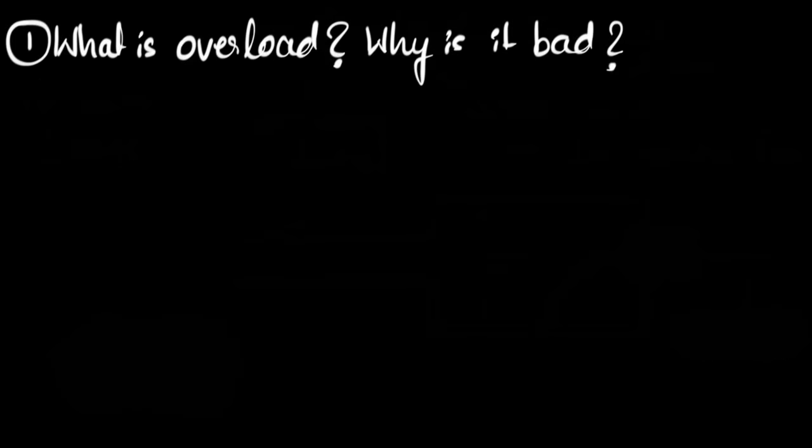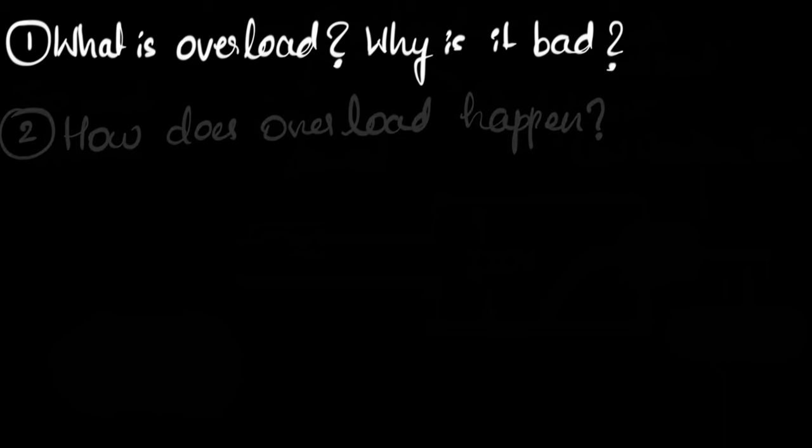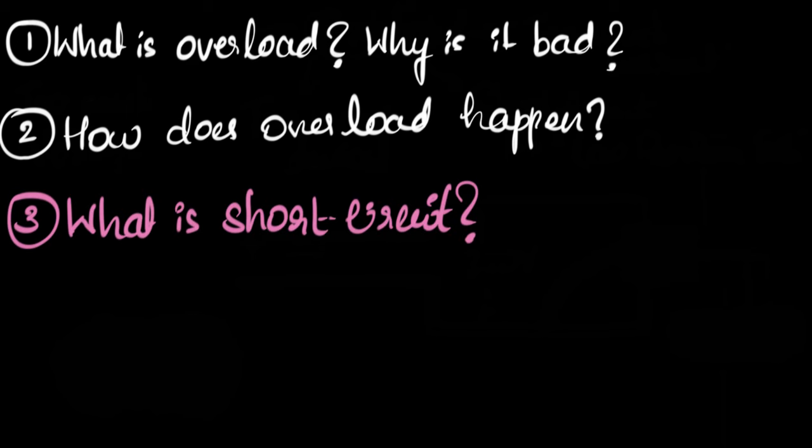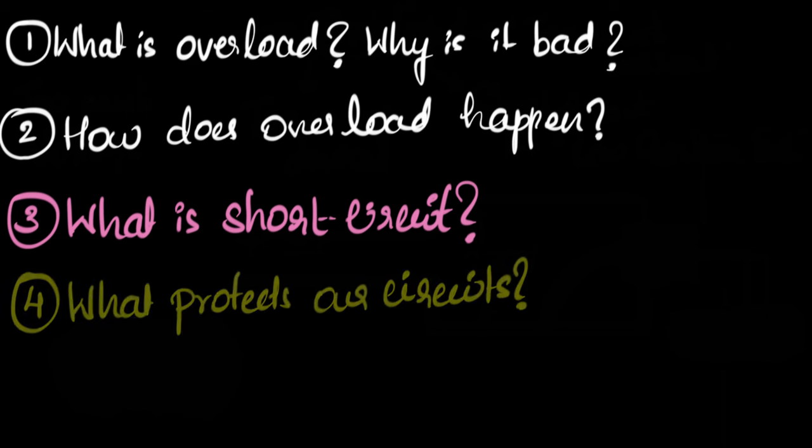Let's quickly recall what we just learned. Can you recall what is the meaning of overload in electrical circuits and why is it bad? Then how does overload happen? What are the different ways in which overloading can happen? Can you explain what a short circuit is now? What is the meaning of the word short circuit? Can you explain that to, say, a friend? And finally, can you explain what protects our circuits from these faults of overloads and short circuits? Do try answering these questions, and if you have some difficulty, go back, feel free to go back and watch the video again.